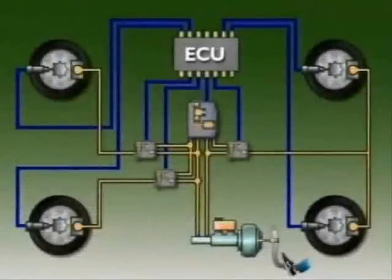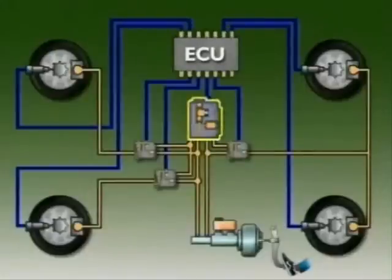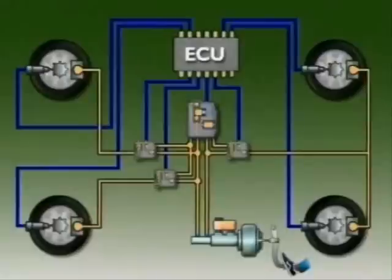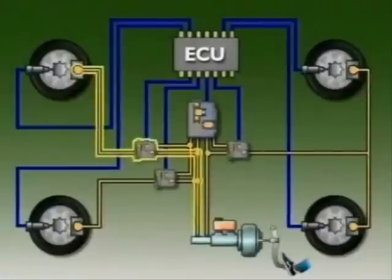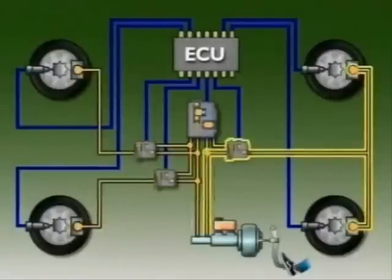The ABS control module, or ECU, sends commands in the form of electrical signals to the hydraulic control unit. This unit executes the commands using three solenoid valves connected in series with the master cylinder and the brake circuits. One valve for each front wheel hydraulic circuit, and one for both of the rear wheels.